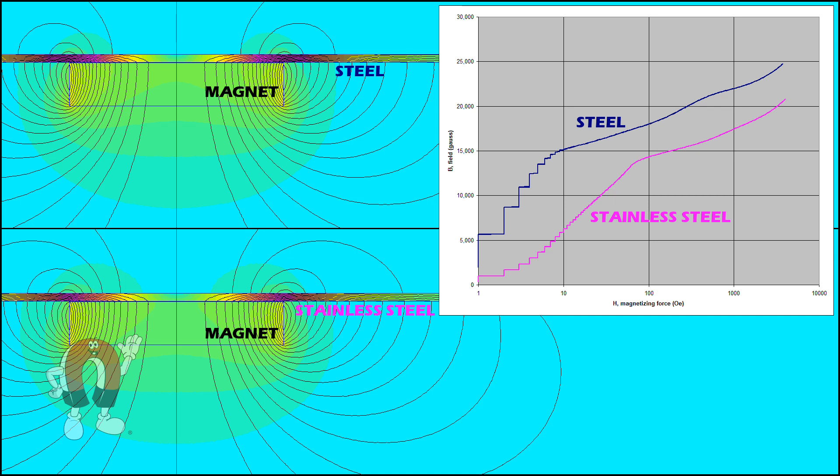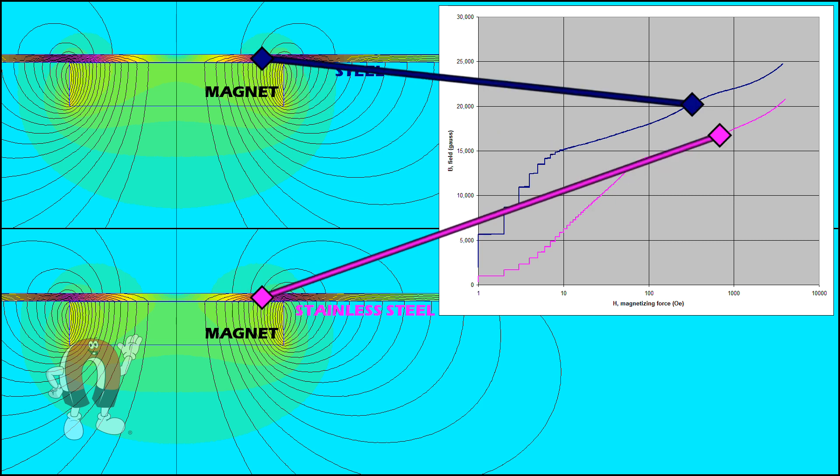Even for this simple setup, with one magnet sticking to a steel sheet, the answer varies depending on where you look. Points close to the center line of the magnet are operating lower down on the curves. It climbs higher as we approach the edge of the magnet, where edge effects create the strongest field.